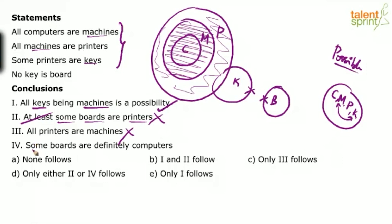The last conclusion says some boards are definitely computers. The word 'definitely' here is redundant — let's just look at the conclusion: some boards are computers. When you look at the basic diagram, boards and computers do not overlap at all. So some boards are computers does not satisfy the basic diagram, and you can straight away say it is wrong. So your answer is: only one follows — two, three, and four do not follow. Option E would be the answer.